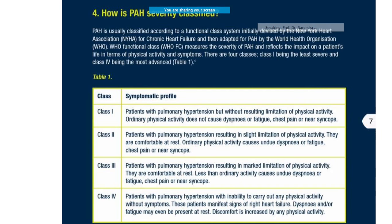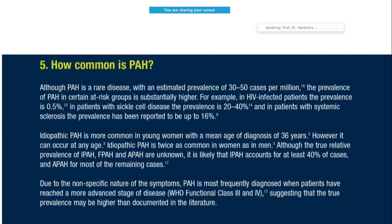When a patient comes with clinical problems, you can classify signs and symptoms into four classes similar to the NYHA classification. Class 1 doesn't cause any significant limitation of physical activity. Class 2 has slight limitation where ordinary activity causes dyspnea, fatigue, chest pain, or near syncope. Class 3 causes marked limitation - comfortable at rest but symptoms with minimal activity. Class 4 patients are symptomatic even at rest.